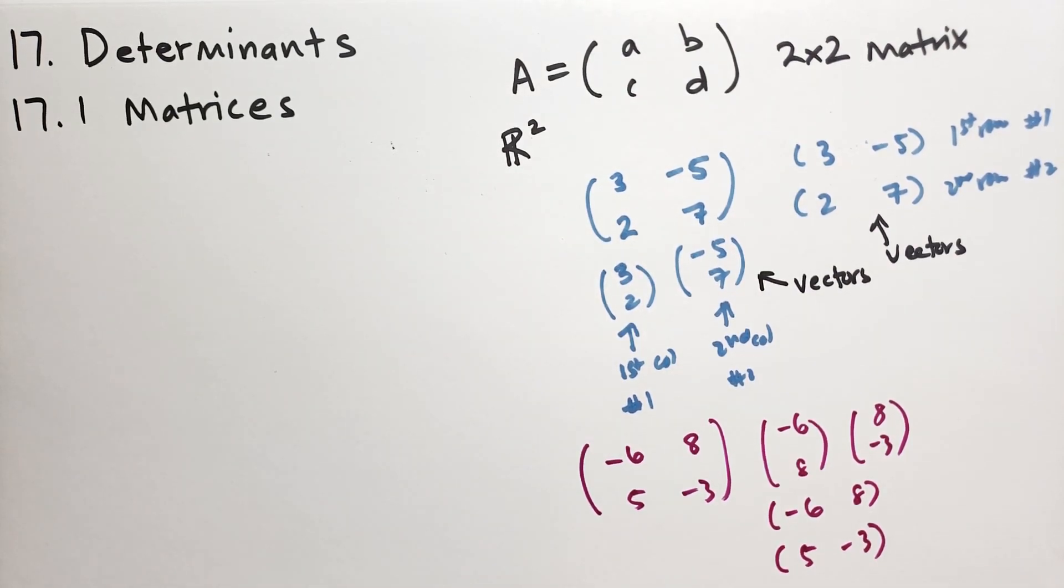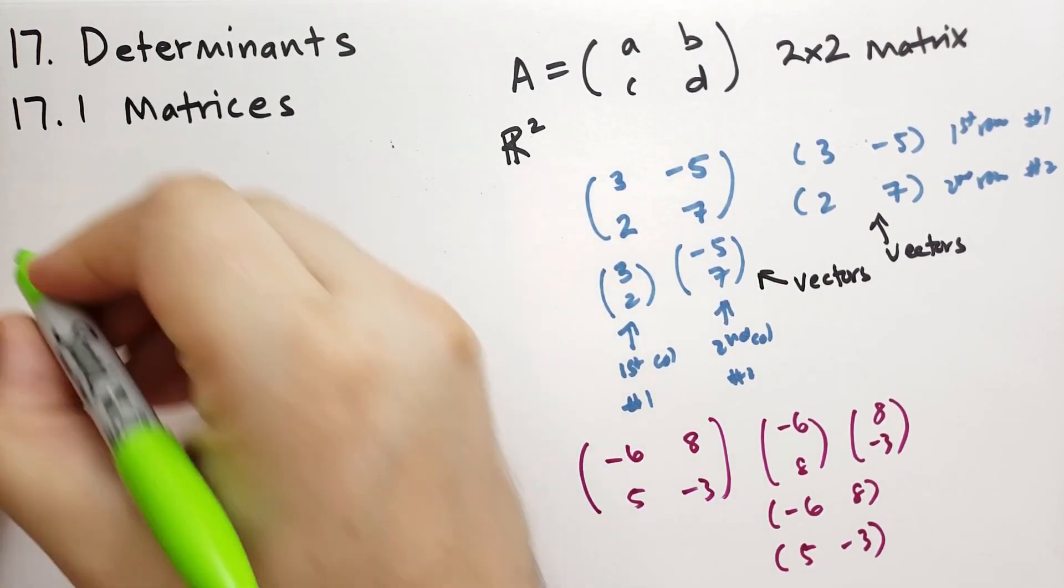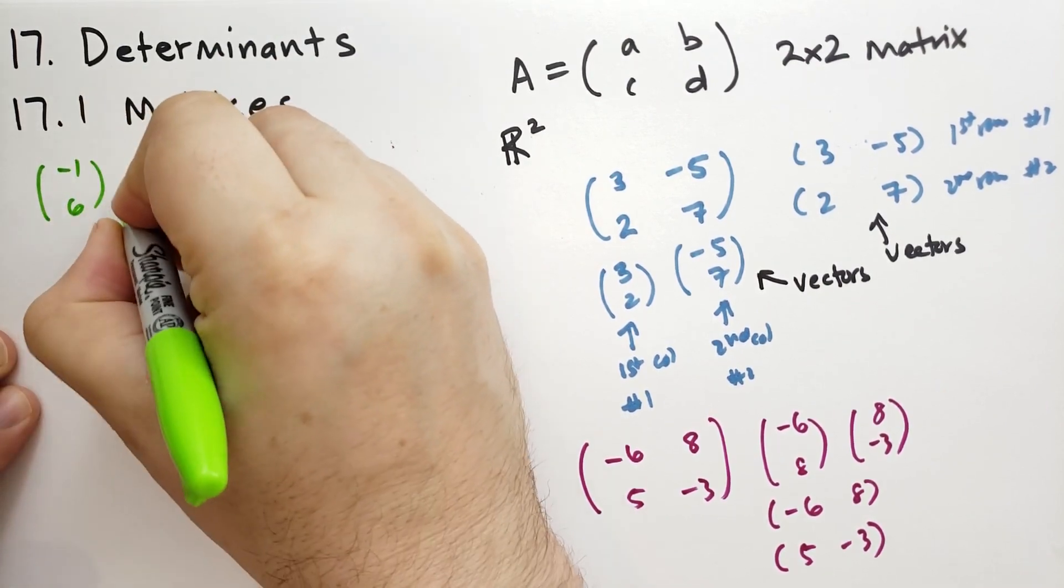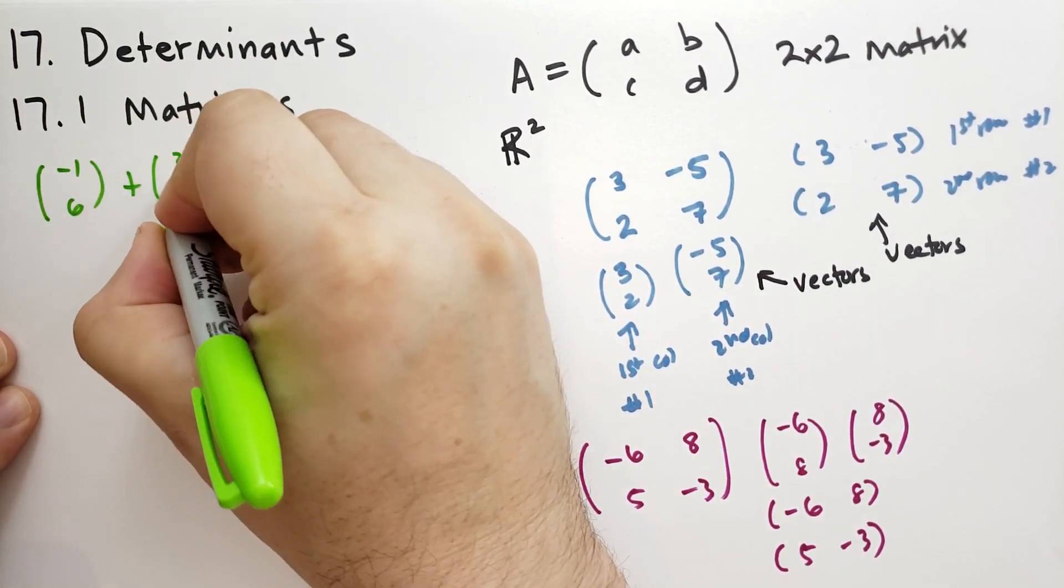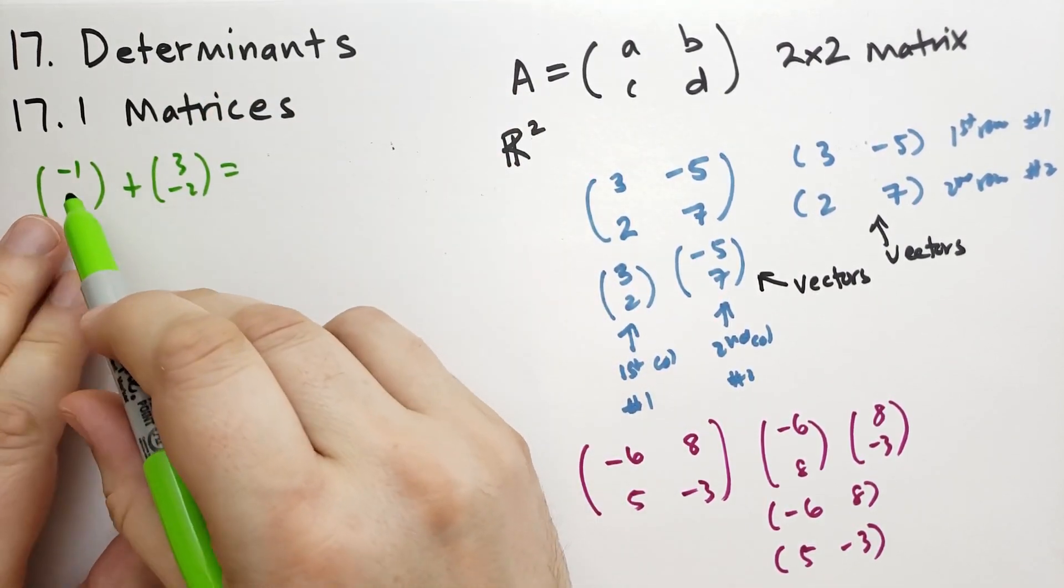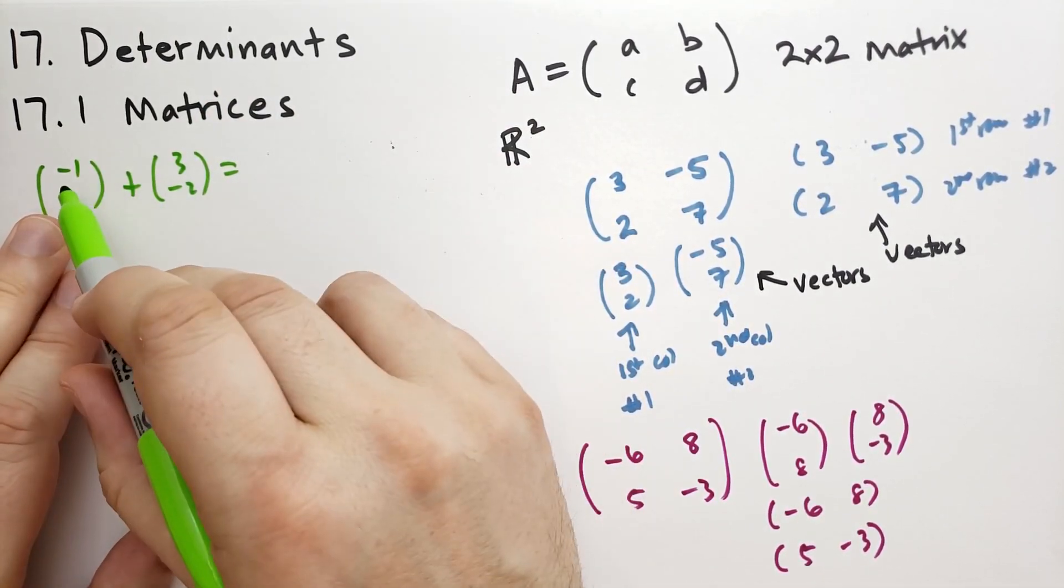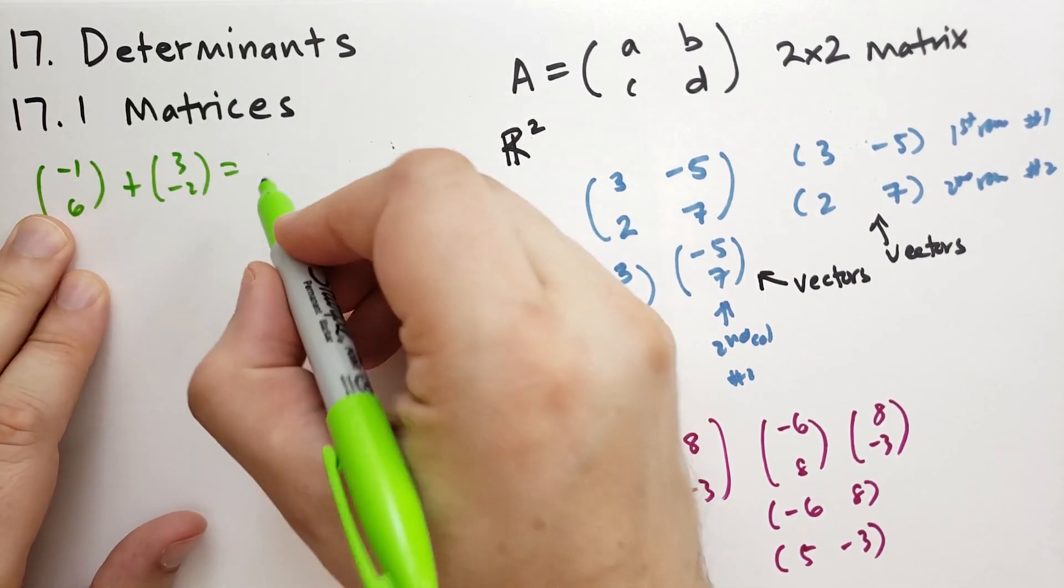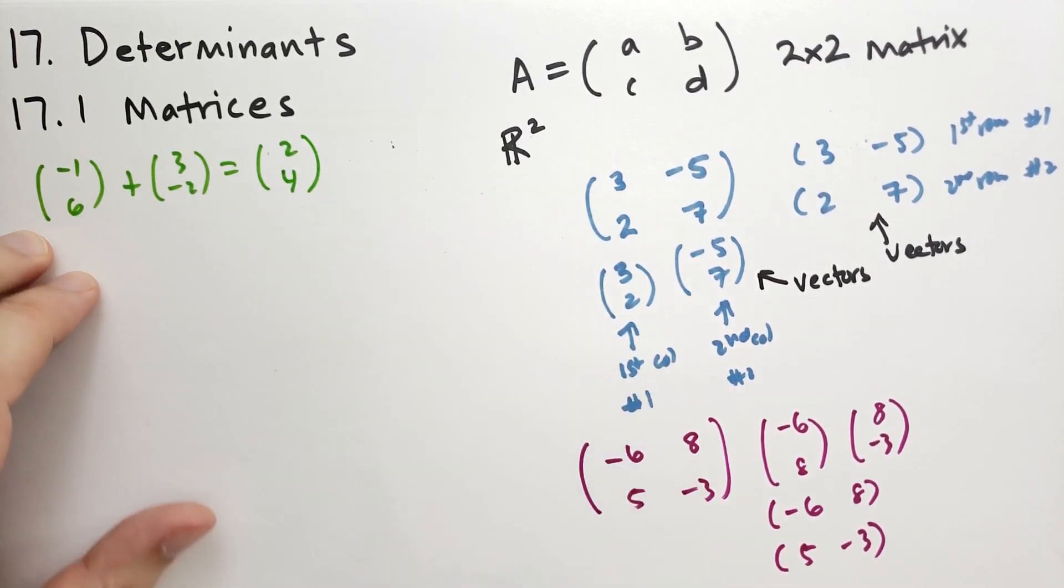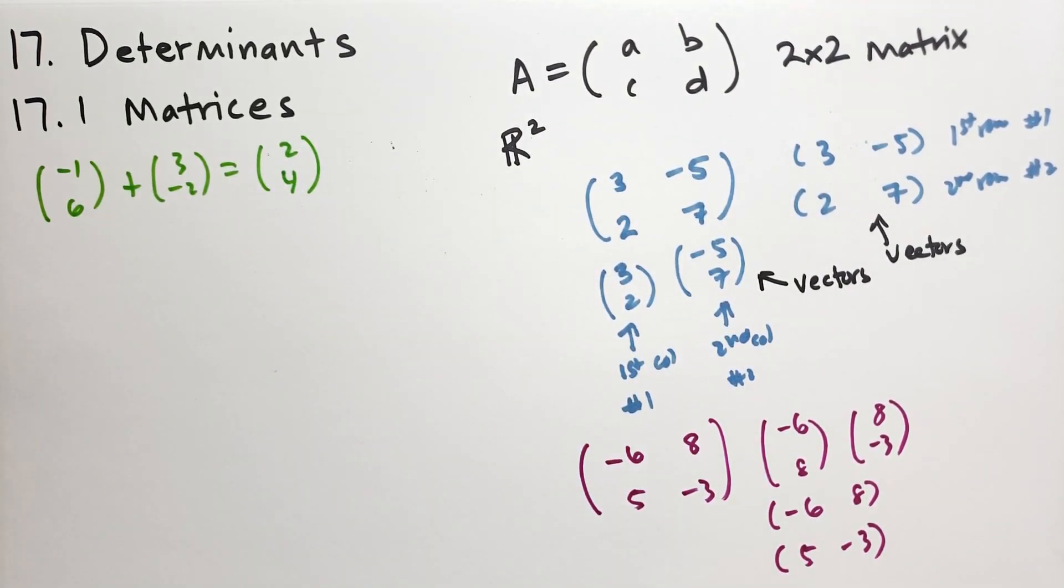If we were to add column vectors, let me start with an example. We have the column vector minus 1, 6 and we're going to add to that 3, column minus 2. What we're going to do here is just add across. So minus 1 plus 3 gives you 2, and 6 minus 2 gives you 4. We just add across when adding column vectors.